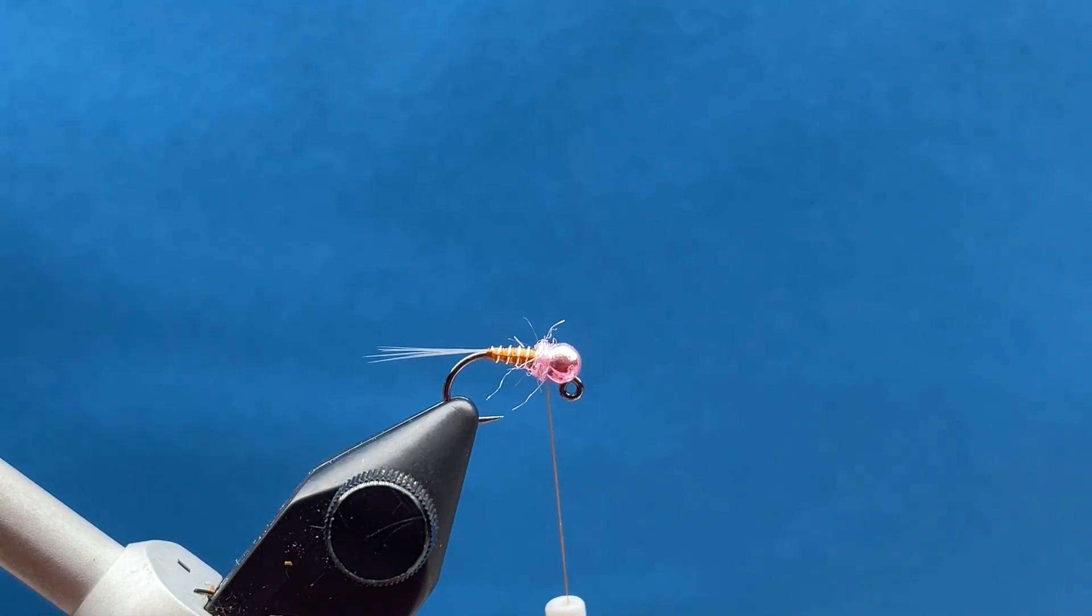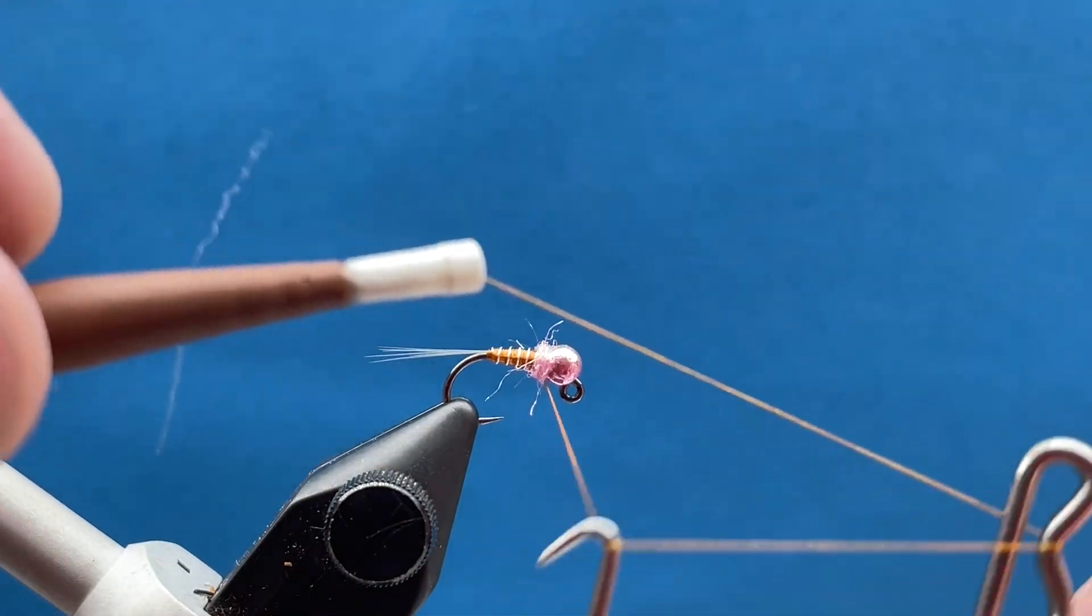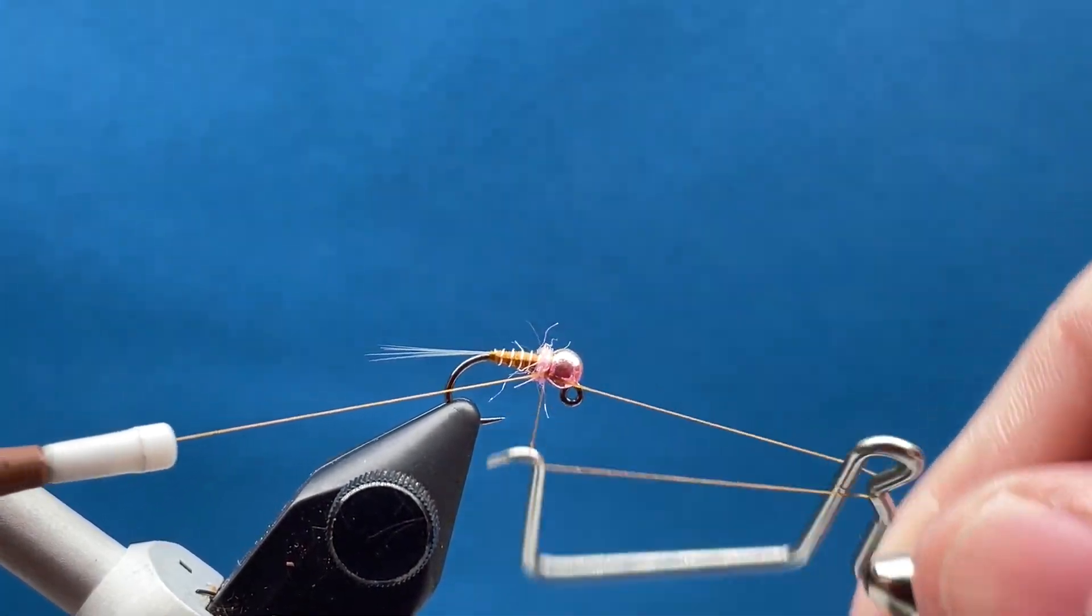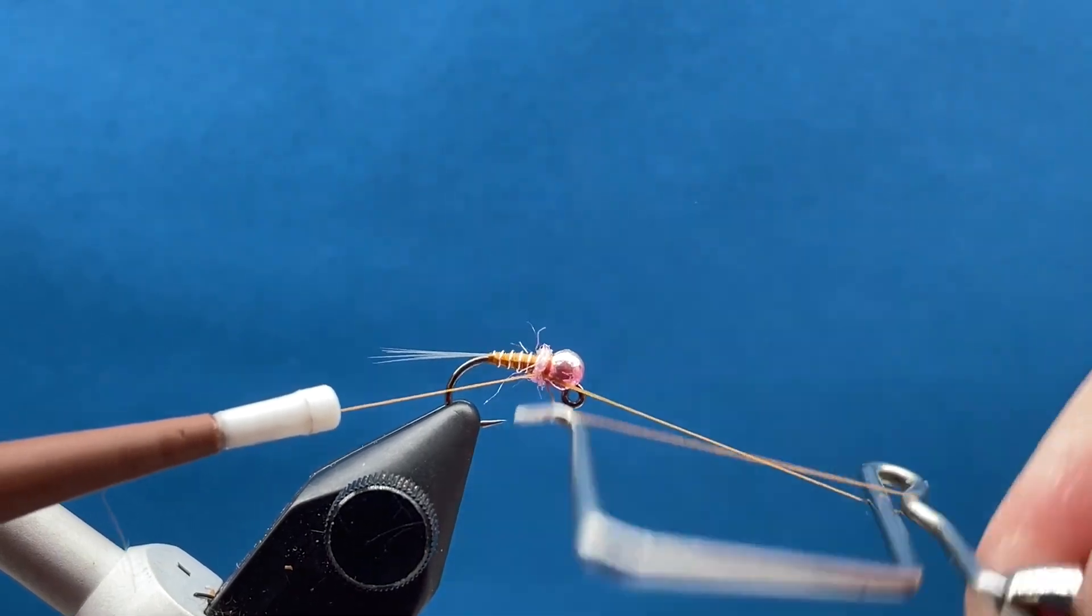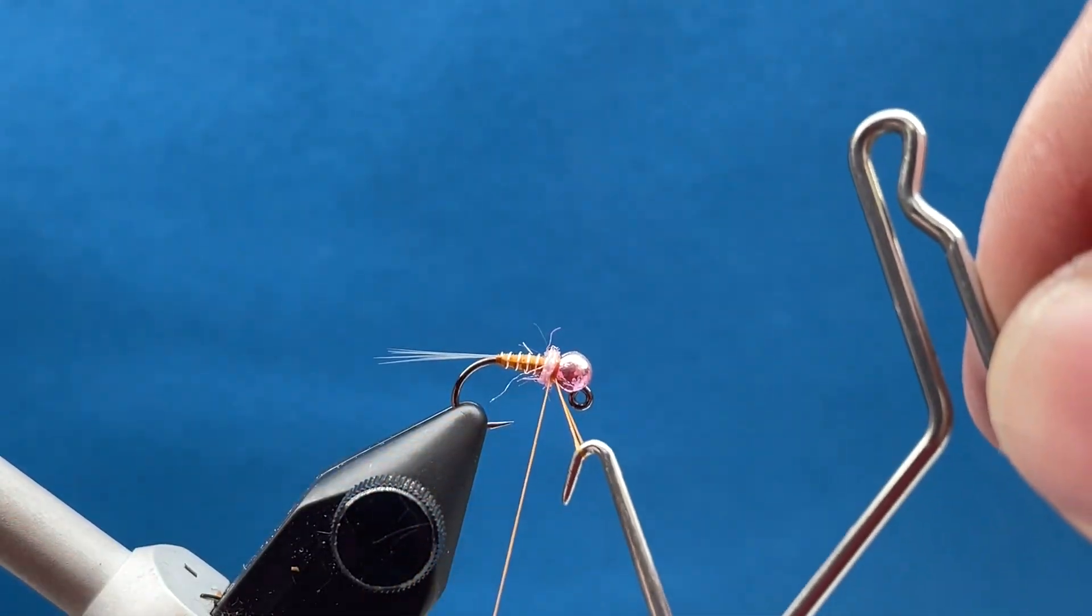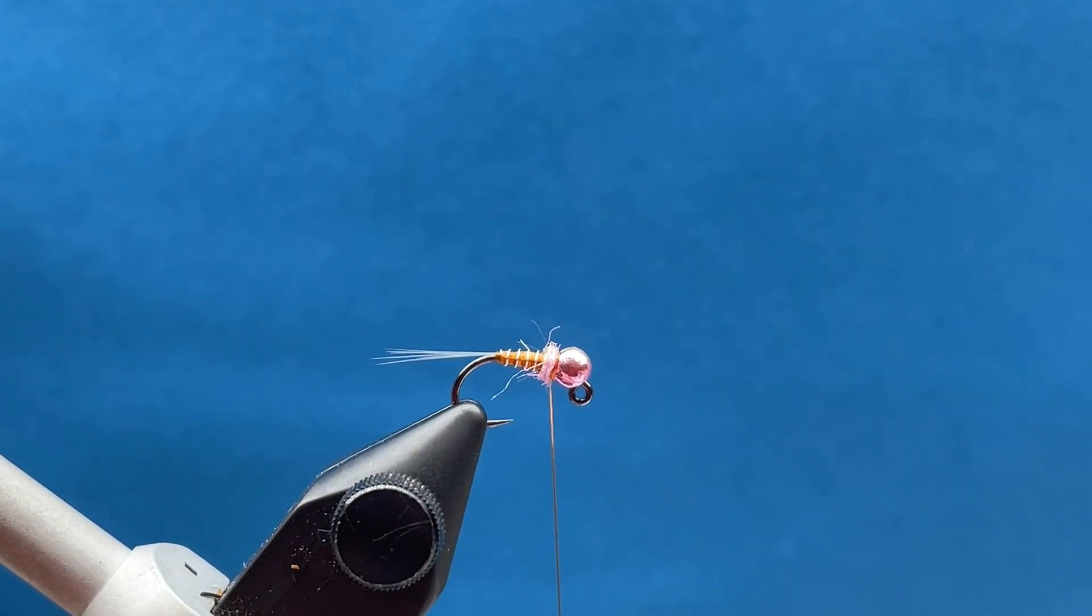That is it, so then we can whip finish. Just let that whip finish roll right against the back side of the bead, and that builds a nice smooth collar on your fly as well.